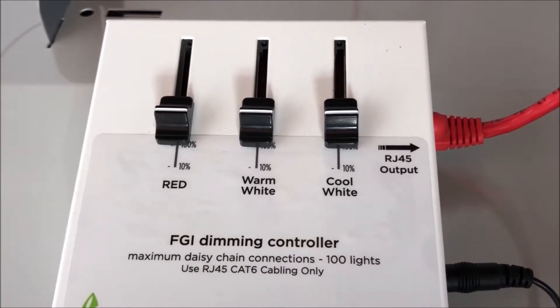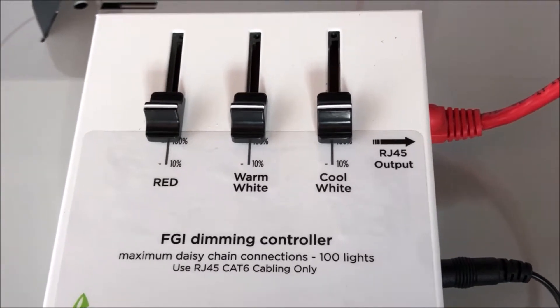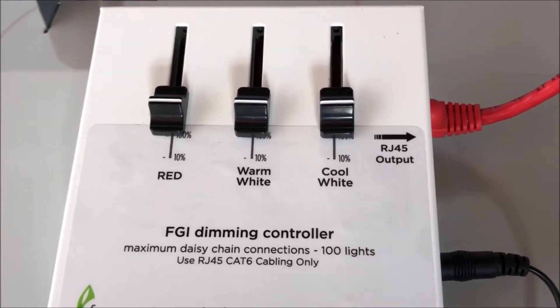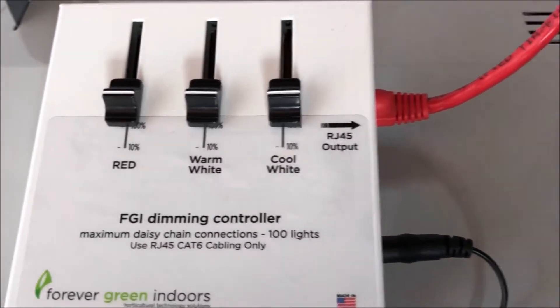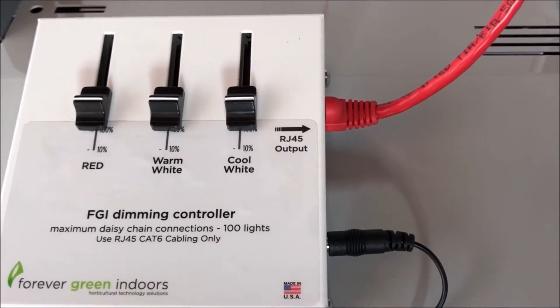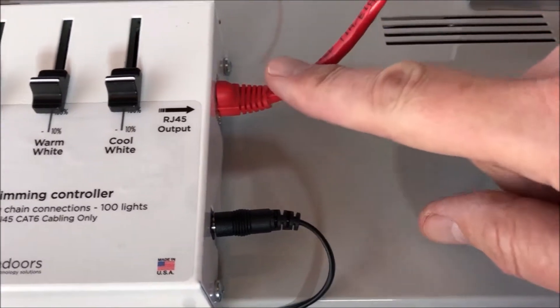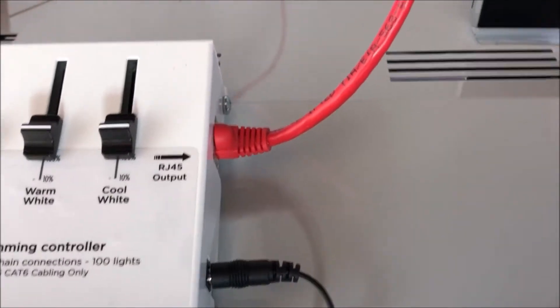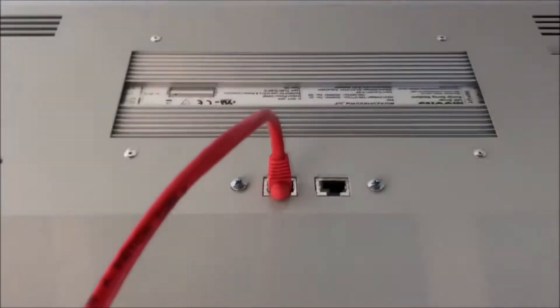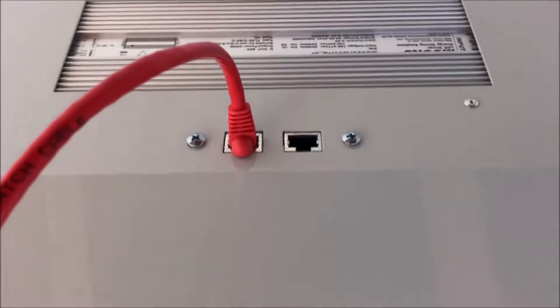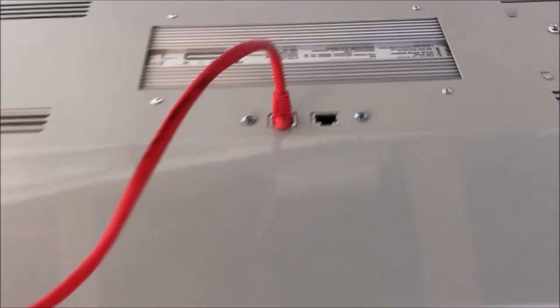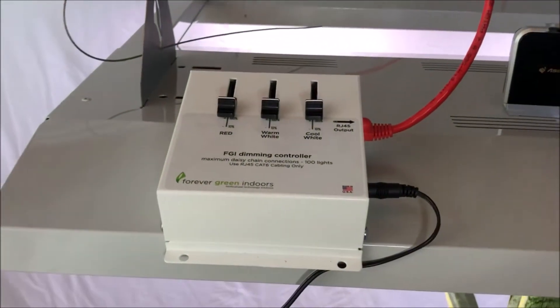This is the FGI controller, and you can see right now it's set to the lowest level, which is 10% of the light's output. This is a true 700 watt light, so 700 watts of wall draw. Notice that it is connected with a really simple RJ45 connection and a cat 6 computer cable, and then we have the ability to daisy chain up to 100 of the lights together, so a single controller could control an entire room of lights.